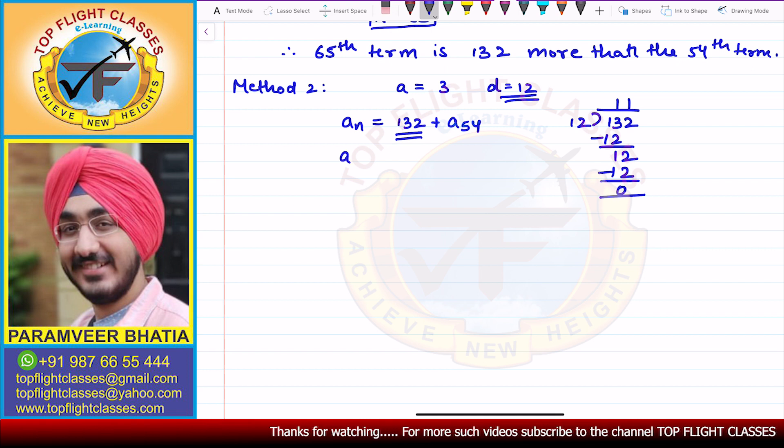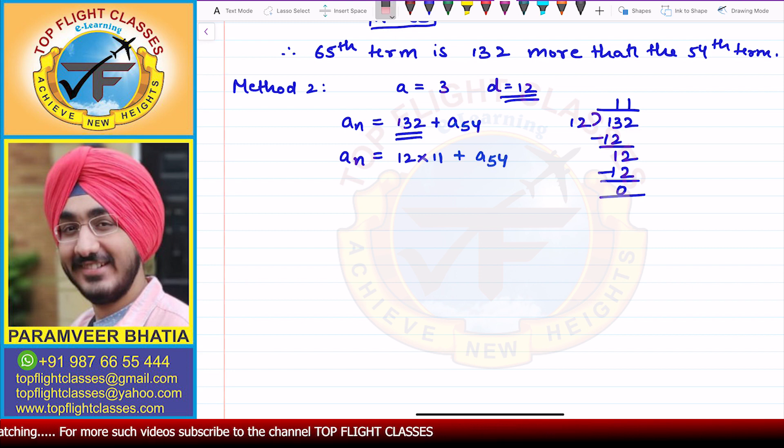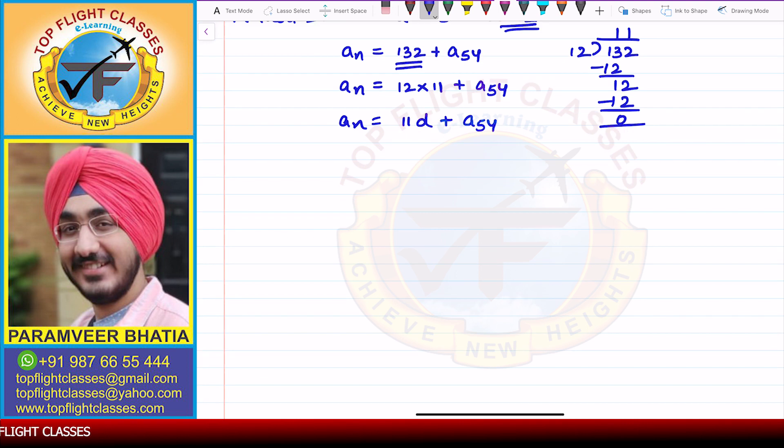From here, I get that An equals 12 into 11 plus A54. So An equals 11D plus A54, because D in this case is 12. Now, if we look at the An formula, A plus (N minus 1) times D equals 11D plus A54, which is A plus (54 minus 1) times D.